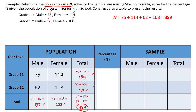Now let's compute the sample size using Sloven's formula. What is the value of N? It's 359 — we have already solved that. What is the value of E? The margin of error is 5%, that's 0.05. So we substitute: N is 359, over 1 plus N which is 359 again, times the margin of error 0.05, then you square that.